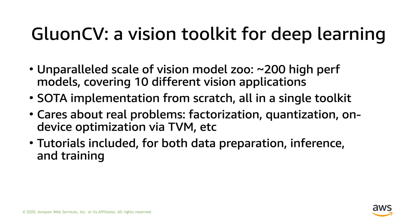Finally, GluonCV is here today. It provides an unparalleled vision model zoo with roughly 200 high-performance pre-trained weights, covering more than 10 different vision applications. It also comes with state-of-the-art implementations from scratch — not by importing other packages, but actually written in MXNet or NumPy in a single toolkit. Therefore, you can access all details and even modify them for a customized solution. GluonCV also cares about real problems, combining solutions across domains so that high-performance models get pruning, quantization, on-device optimization, and more, all together in GluonCV. We also include tutorials to onboard as many potential users as possible with important details.